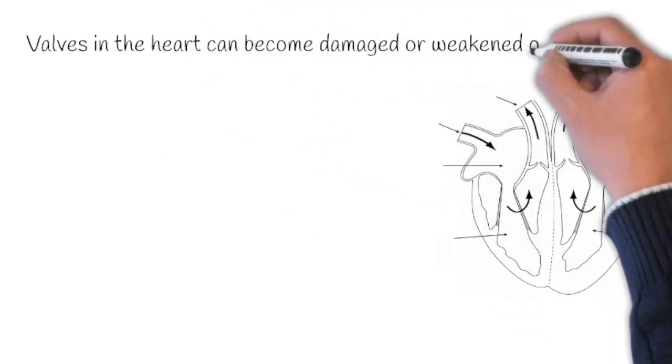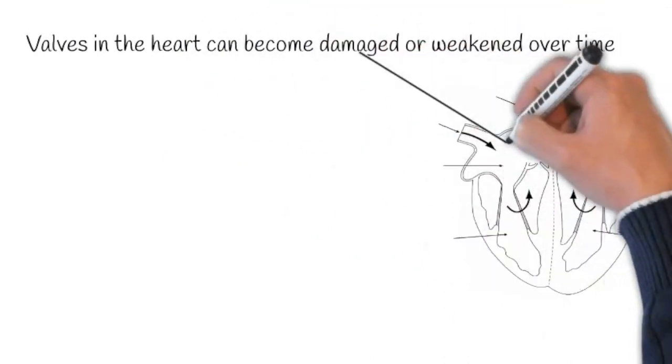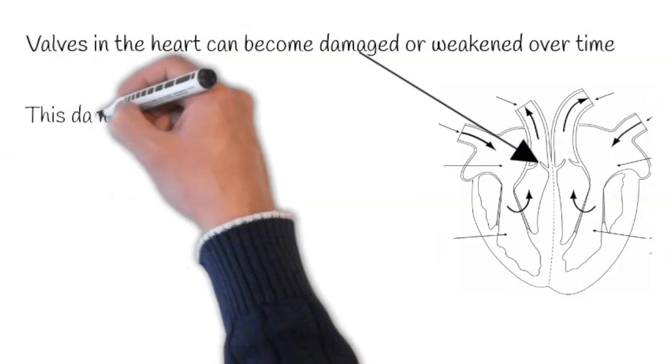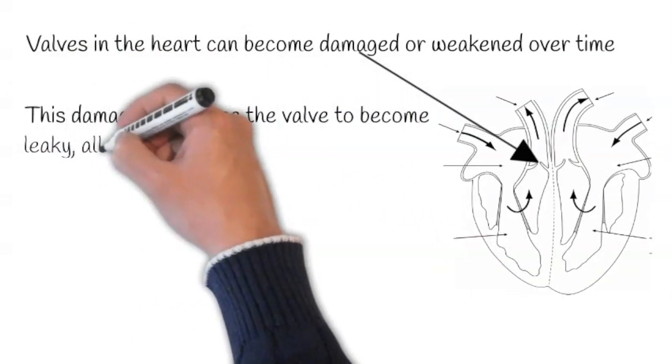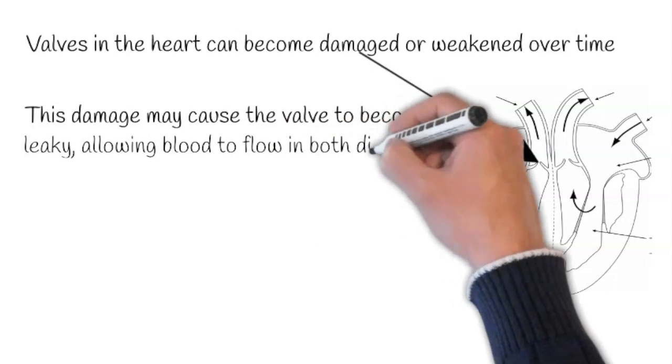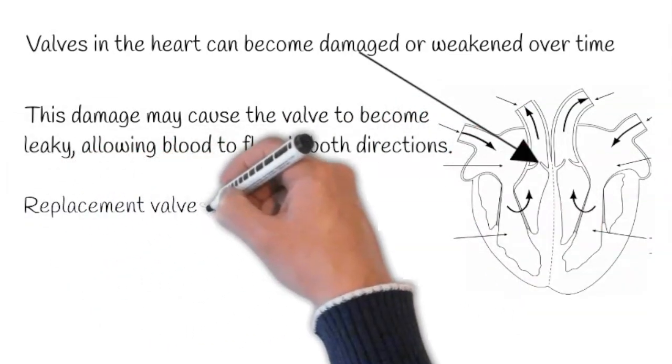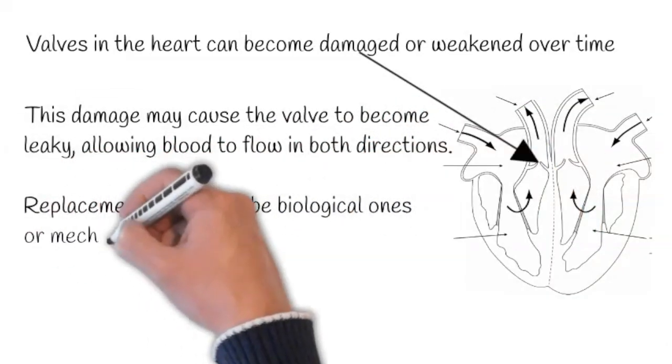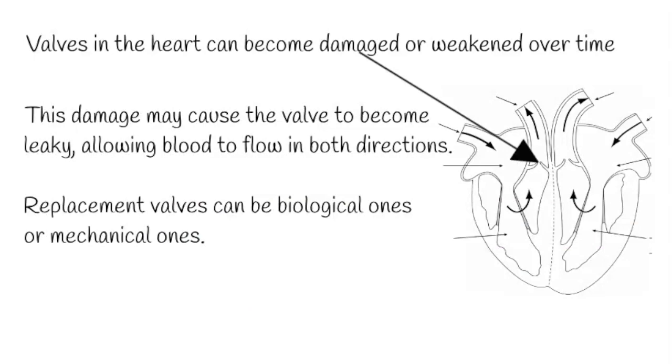Valves in the heart can become damaged or weakened over time. This damage may cause the valve to become leaky, allowing blood to flow in both directions. Replacement valves can be biological ones or mechanical ones.